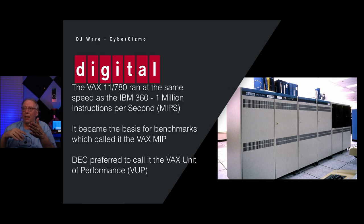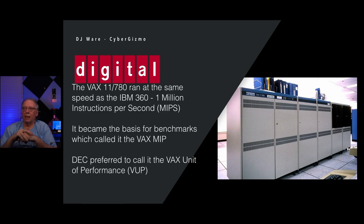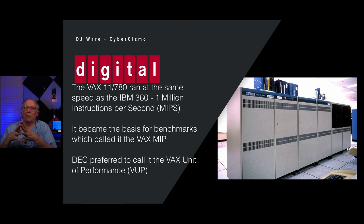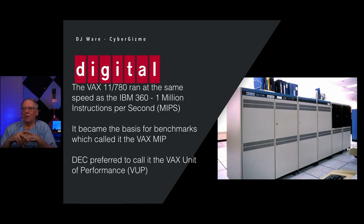The term MIPS — millions of instructions per second — became the basis for benchmarks. Even the Byte benchmark would refer back to a VAX MIP as the baseline for comparison. The problem with MIPS is that it has different meanings depending on hardware architecture, especially on machines that are multi-core, have multi-processors, and can run things concurrently. DEC preferred to call it a VAX unit of performance, or VUP, though that name never stuck — it was always referred to as a VAX MIP.